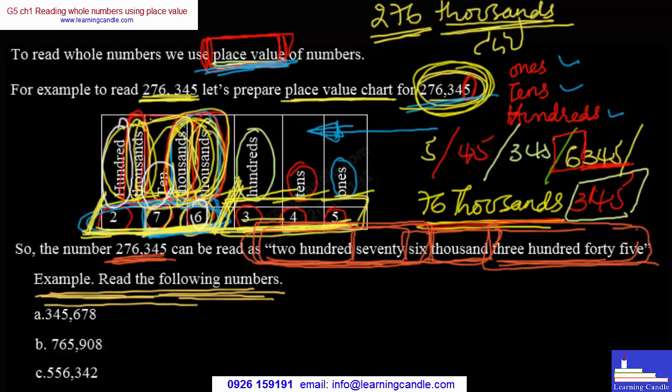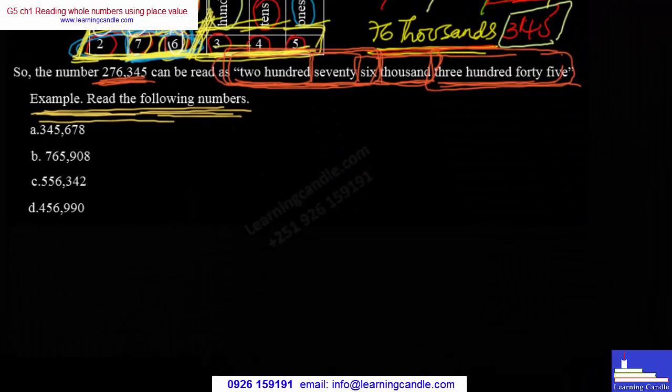If you are not at the place value chart, you can see it in the place value chart. This is the example chart. You can see that it is not at all. This is the result of the chart.